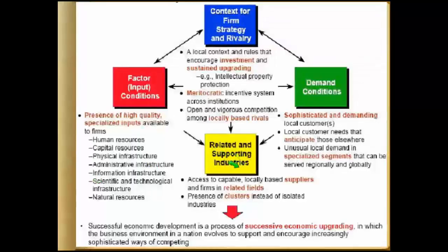ثالثاً، موضوع الصناعات المساعدة — related and supporting industries — إذا ما كان في موردين جيدين لن تنجح الشركة في أعمالها. رابعاً، موضوع الطلب — demand — إذا لم يكن هناك طلب واضح لمنتجات الشركة لن تنجح في صنع ميزة تنافسية. هذه الأربعة الأركان هي الـ Diamond Model. إذا أردتم أن تفهموا الريدنج، افهموا هذه الرسمة بشكل جيد.